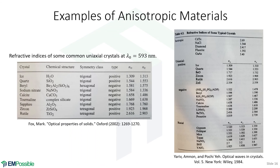I'm not going to spend a lot of time on this slide, but I wanted to put some example materials out there that are isotropic, uniaxial, and biaxial, and give you an idea of the numbers we get from real materials. For more extreme values, we'd have to look at metamaterials and periodic structures, which is a topic later on. Feel free to pause the video and look at these numbers.